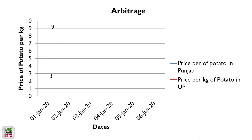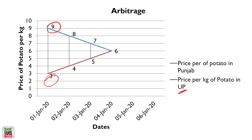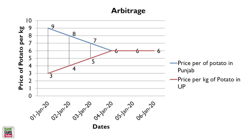Arbitrage: the price of potatoes in two markets is different — 9 rupees per kg in Punjab and 3 rupees per kg in UP. People are going to buy from UP at 3 rupees and sell in Punjab. This increases demand in UP and supply in Punjab, and eventually the prices converge to the same level. That is the arbitrage process.